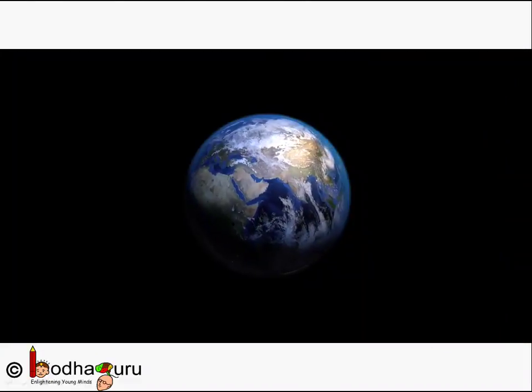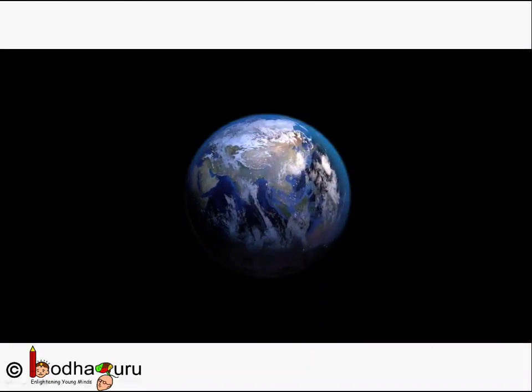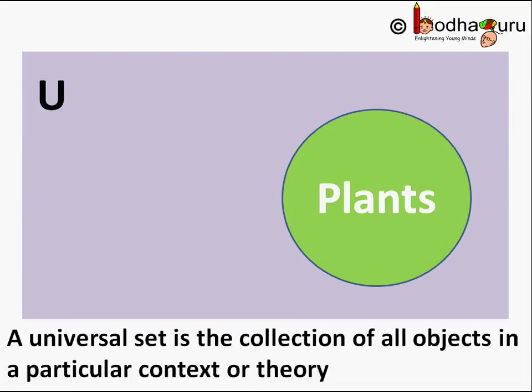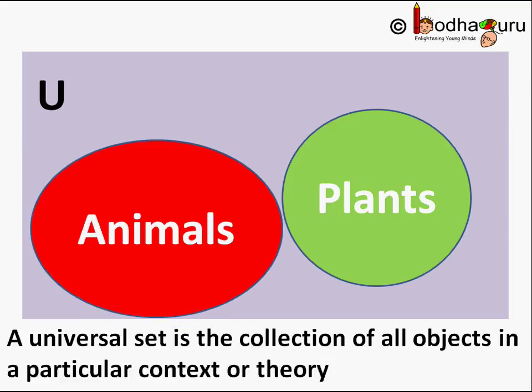Like a set of all living things on this planet including human beings, animals, and plants. So we can call a set of living things, denoted by U, a universal set.